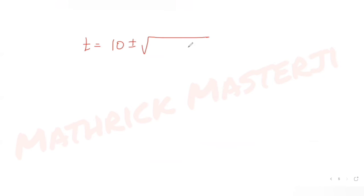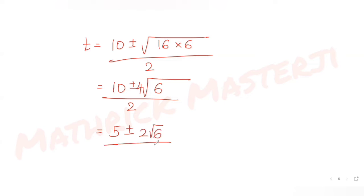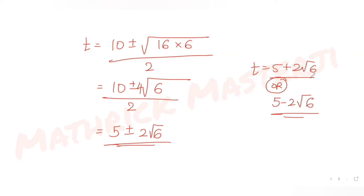Simplifying √96: 96 = 16 × 6, so √96 = 4√6. Therefore t = (10 ± 4√6) / 2 = 5 ± 2√6. This gives two values: t = 5 + 2√6 and t = 5 − 2√6.